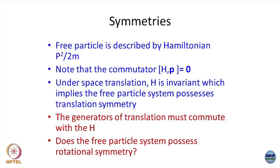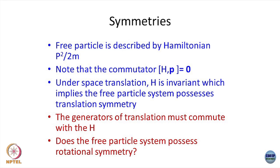Coming back to some connections with what we were looking at in discrete groups, let us take a simple free particle system. A free particle is just given by a kinetic energy with no potential energy, and the momentum p could have any value — it is not confined to a box. What you can show here is that if you take the commutator of the Hamiltonian for a free particle with momentum px, py, pz, that commutator is 0.